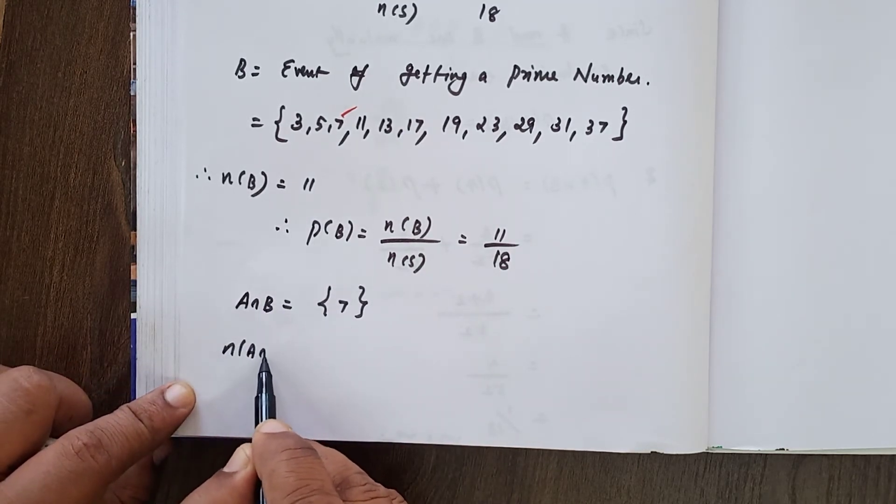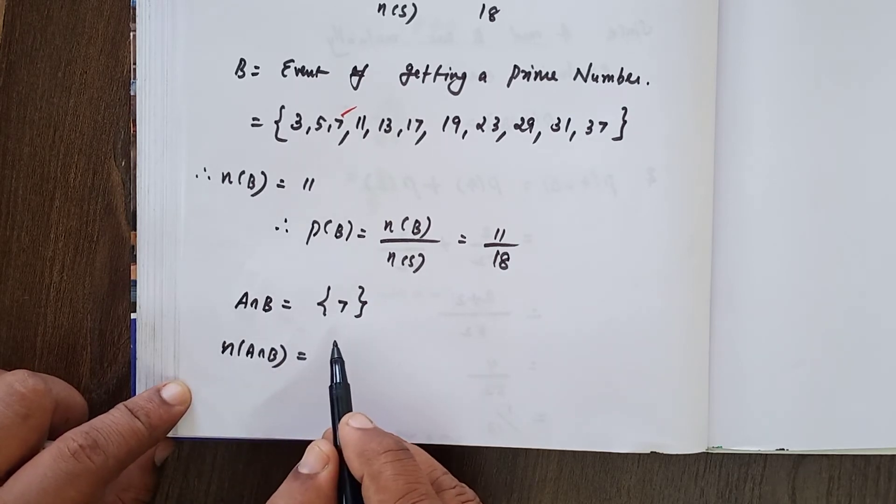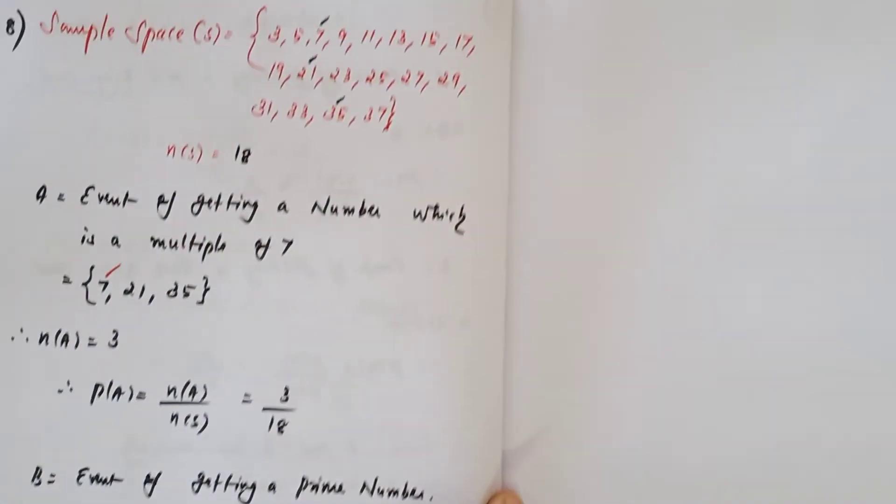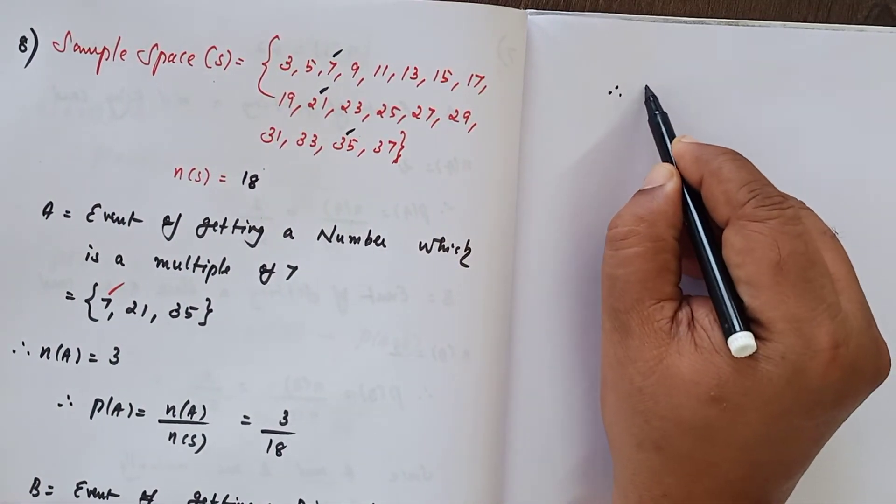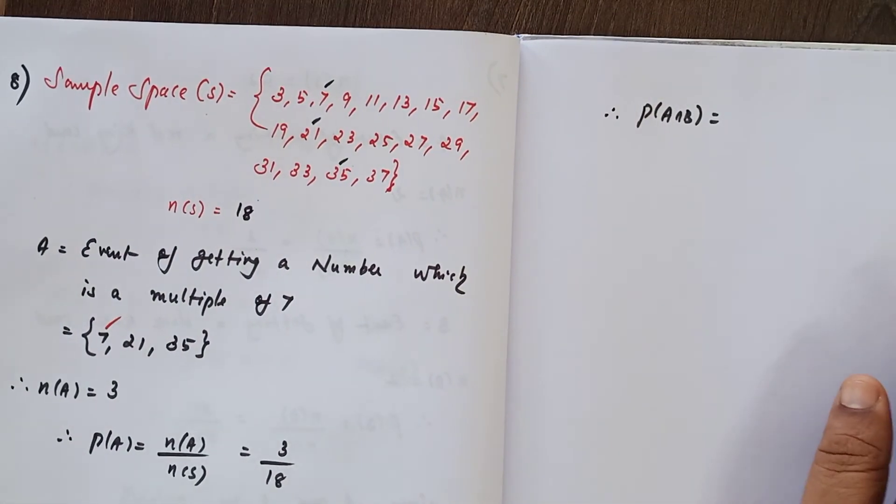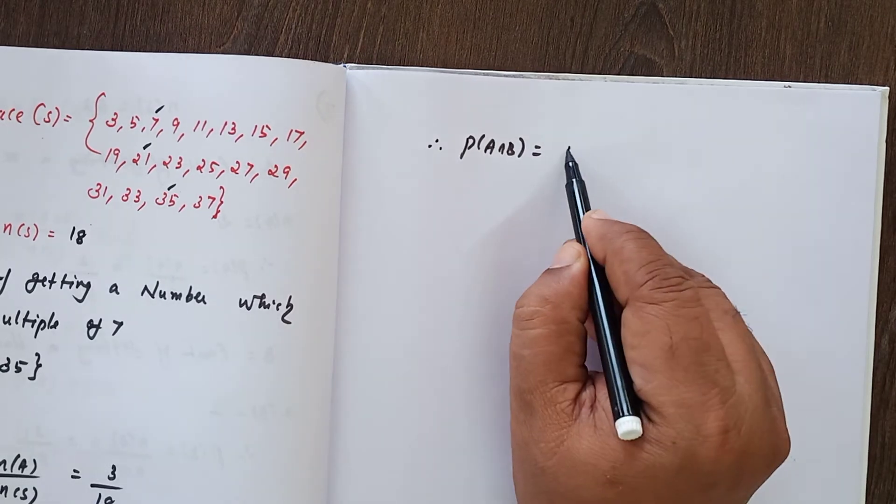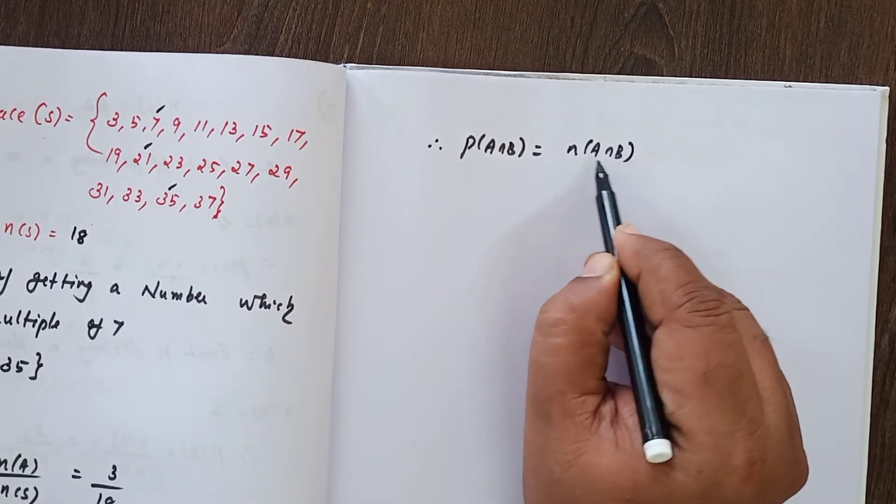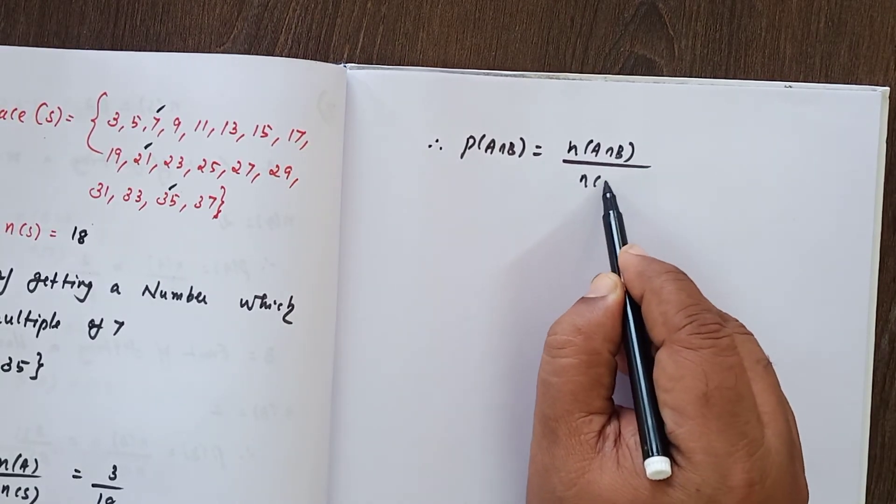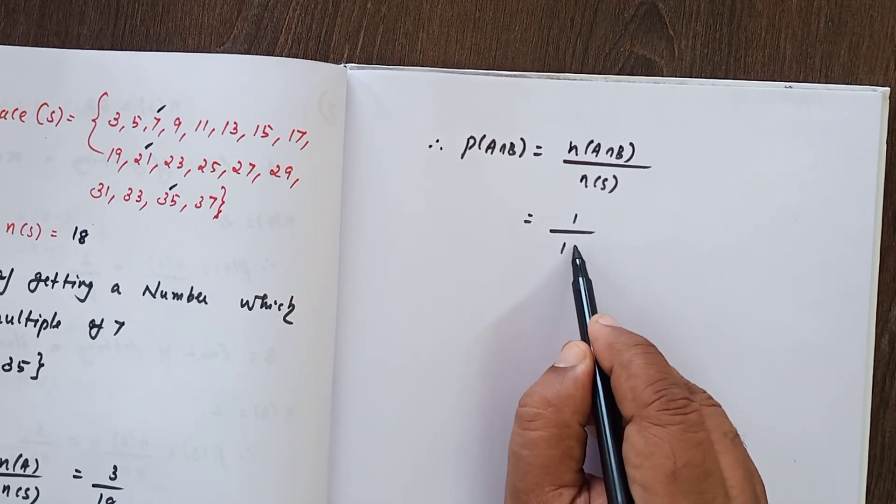Now n(A intersection B) that is equal to only one number. Therefore, P(A intersection B) formula: n(A intersection B) divided by n(S). n(A intersection B) is 1, n(S) is equal to 18.